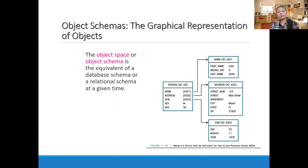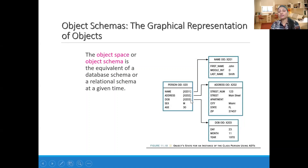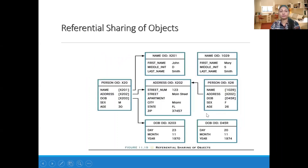In RDBMS, all of these things are represented in terms of relations — that is, tables. But here, all things are represented in terms of classes and objects, where some attributes of a class can be ADTs — abstract data types — having further attributes.